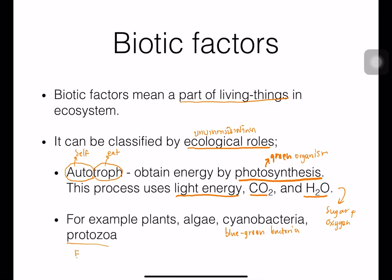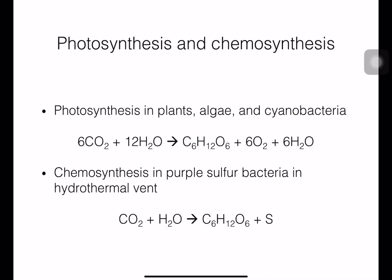Some protozoans can do photosynthesis too, for example Euglena. Algae break into many groups: red algae, brown algae, and green algae. In the photosynthesis equation, carbon dioxide is used as the source of carbon for sugar molecules, hydrogen is also in the sugar molecules, and oxygen is released as oxygen gas. The first product of photosynthesis is glucose, and they also release oxygen and water.